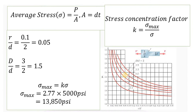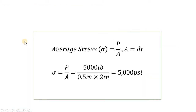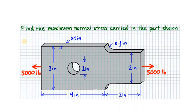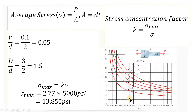First, calculate R over d, where R is the fillet radius. R is 0.1. Over d, which is the small dimension, that is 2. So we get R/d = 0.1/2 = 0.05.